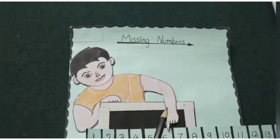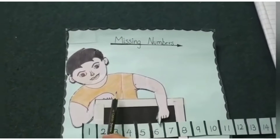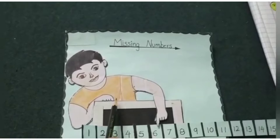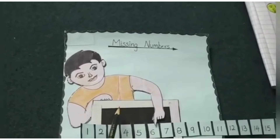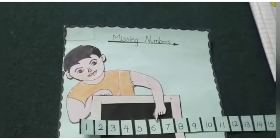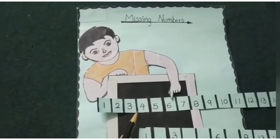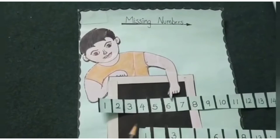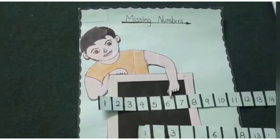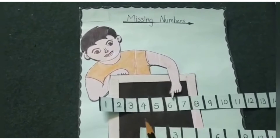You can see this is a picture. The name of this boy is Ojas. He is finding out the missing numbers. Ojas will find out which numbers are missing. Let's see how he will find out.